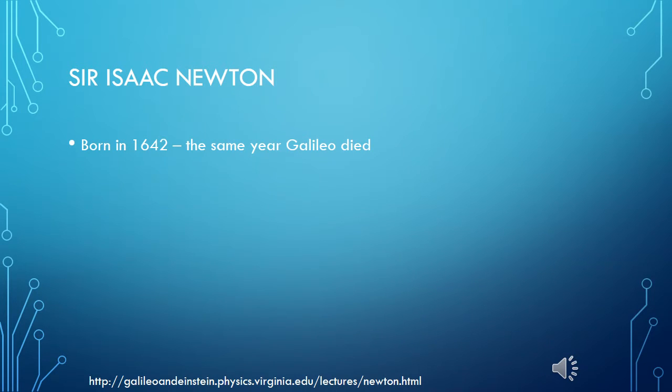Isaac Newton was born in 1642 on Christmas Day. This was the same year that Galileo died. And Isaac Newton was a really tiny baby. He was very premature and not expected to live. Fortunately for us, he did.